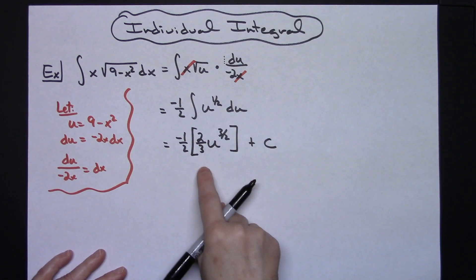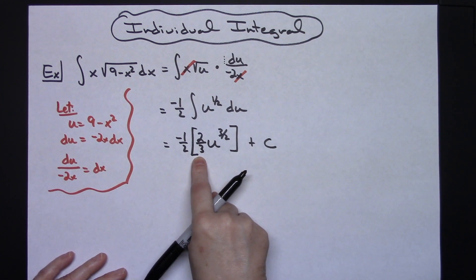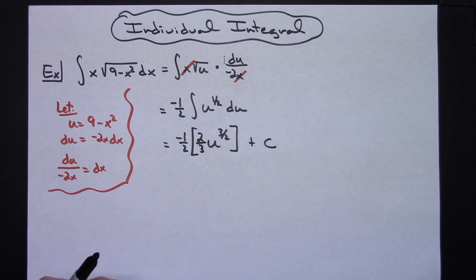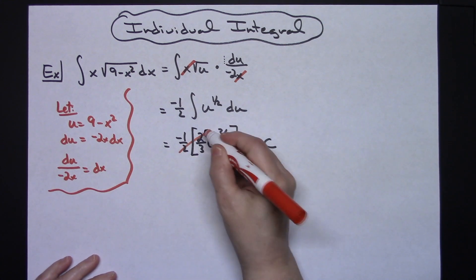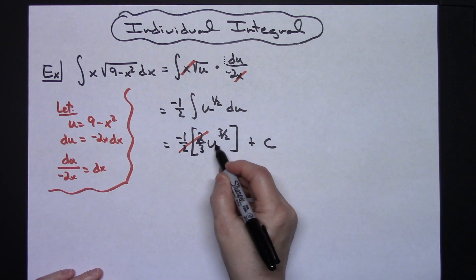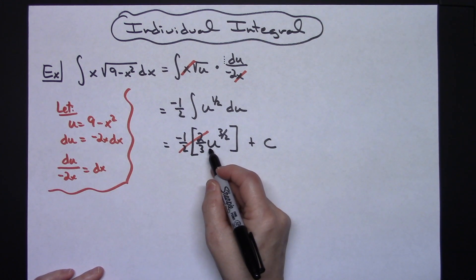The integration is done. I can go ahead and distribute here. Those twos are going to cross out, which will leave me with that negative one-third in front. I am going to put my u back in.